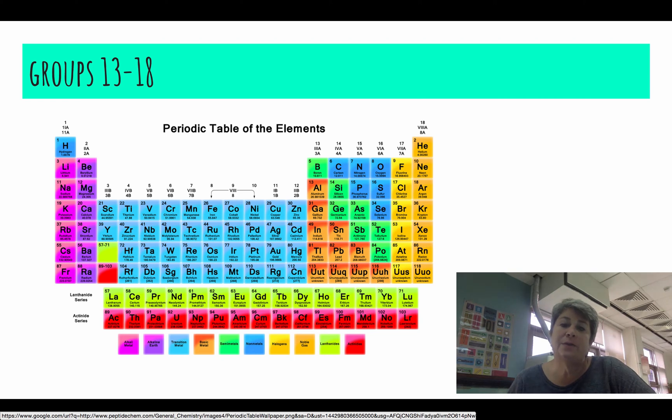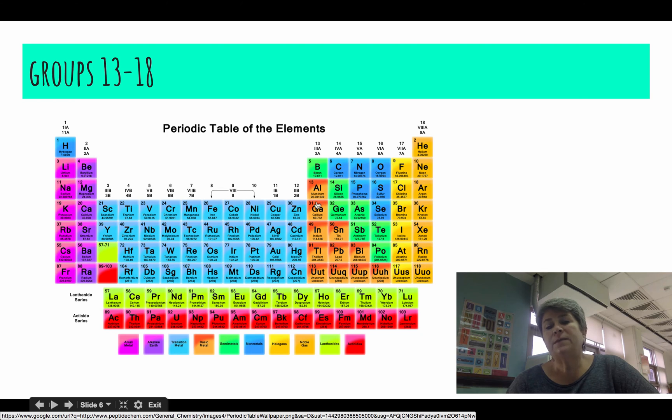How many of you said thirteen? Uh, wrong. They actually have three. So, group thirteen, the boron family, the atoms of these elements have three valence electrons. They have three electrons that are involved in bonding.